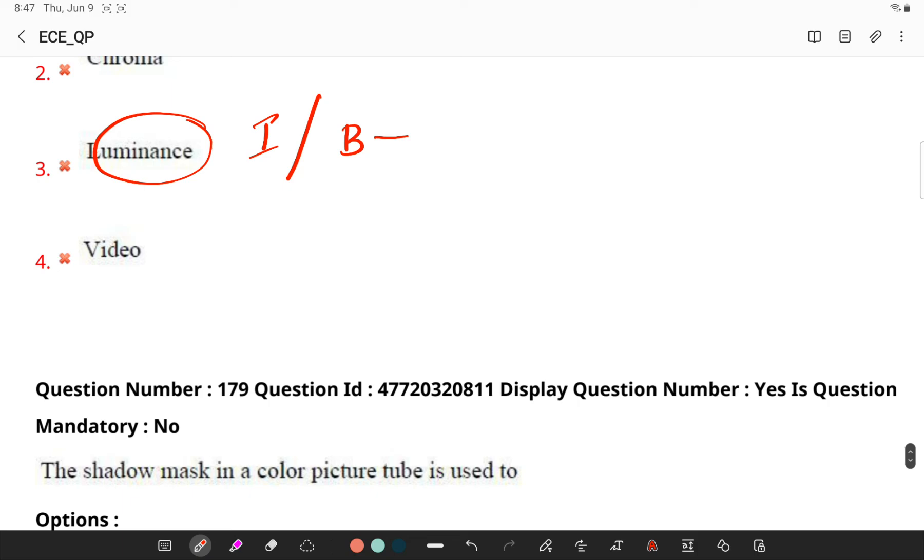The shadow mask in a color picture tube is used to - remember, shadow mask directs the electron beam by absorbing electrons that are going in the wrong direction, so that the beam only hits the desired points and the resulting picture is not blurred.